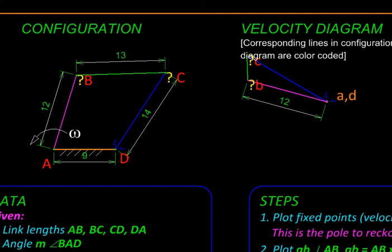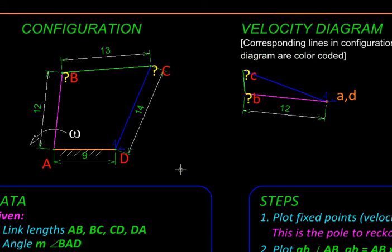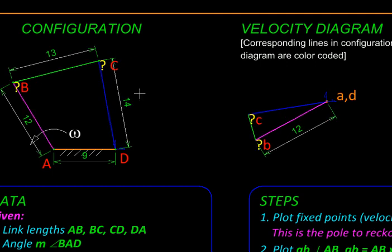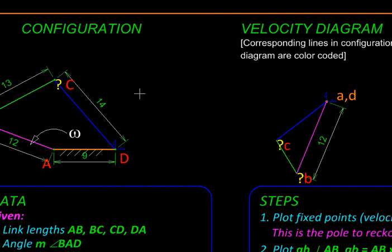The next moment the mechanism is going to move and assume a different orientation like this, and the velocity diagram should also alter. Because this purple line has to remain perpendicular to this purple line, and this green line has to remain perpendicular to this green line, and so on, the velocity diagram actually alters like this as the mechanism moves.